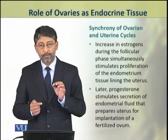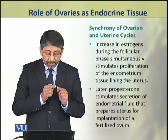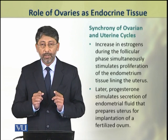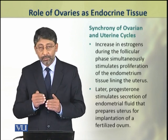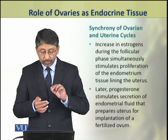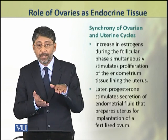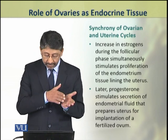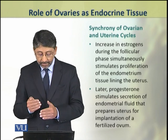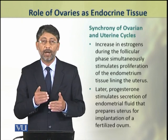Dear students, the ovarian and uterine cycles are synchronized when the increasing estrogen concentration during the follicular phase simultaneously stimulates proliferation of the endometrium tissue lining of the uterus. During the follicular phase, estrogen causes the endometrium and uterus wall to become thick. After ovulation, progesterone further stimulates endometrial fluid secretion, as a result of which the uterus is prepared for the implantation of a fertilized ovum.